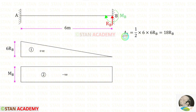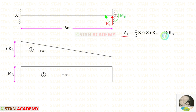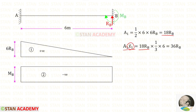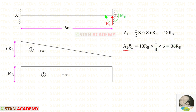For Area 1 (triangle), using the area formula with breadth 6 and height 6Rb, we get Area 1 = 18Rb. For the centroid distance x̄₁, the centroid of the triangle toward the left is (1/3) × b. With breadth 6, that gives (1/3) × 6 = 2. So Area 1 × x̄₁ = 18Rb × 2 = 36Rb.